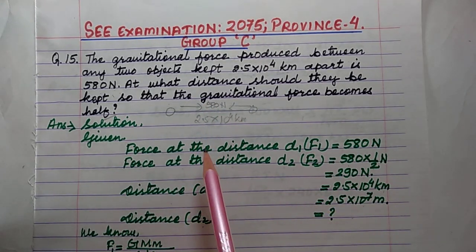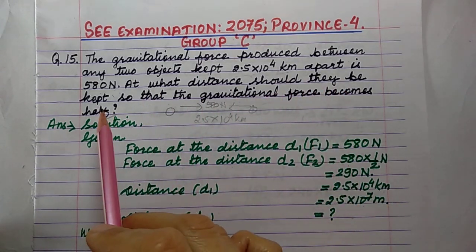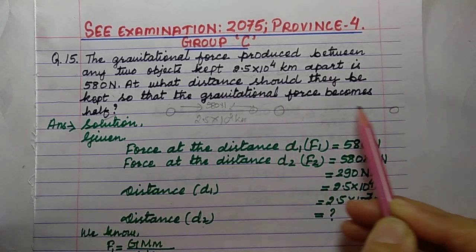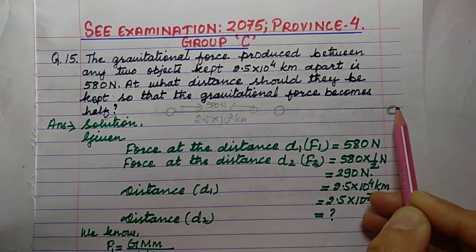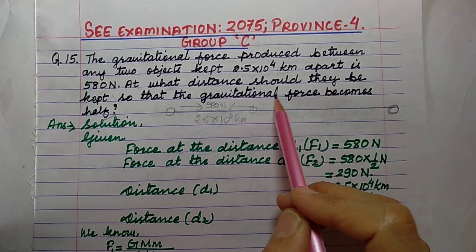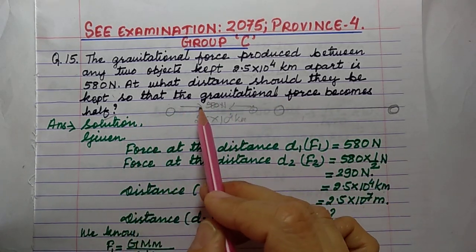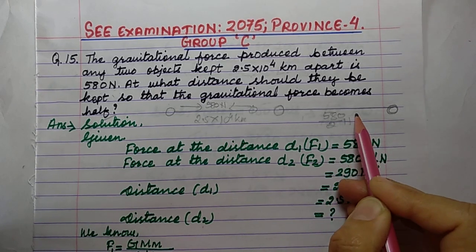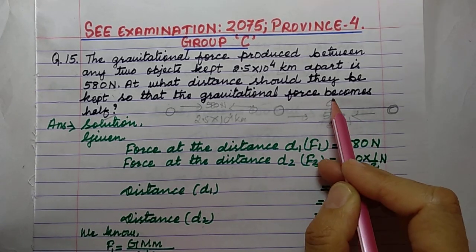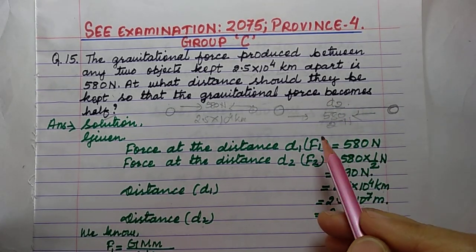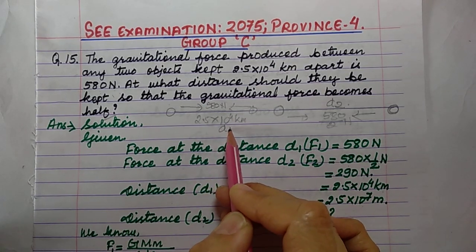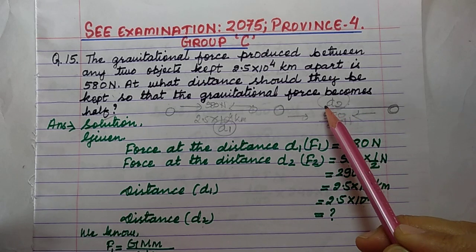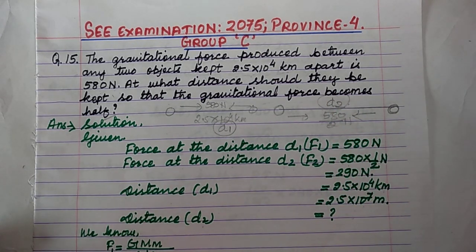The question asks: at what distance should they be kept so that the gravitational force becomes half — half of 580 Newton? Let the new distance be D2 and the original distance be D1. We have to calculate D2 in this numerical problem.